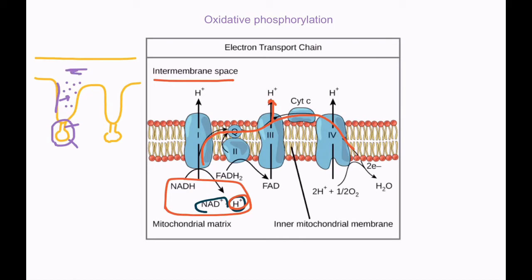The concentration of hydrogen ions in the intermembrane space is now higher than in the matrix, so hydrogen ions want to diffuse into the matrix. They can't pass through the phospholipid bilayer directly, so the only way is through the protein channel of the stalked particle. Hydrogen ions diffuse from higher concentration to lower concentration through this protein channel.